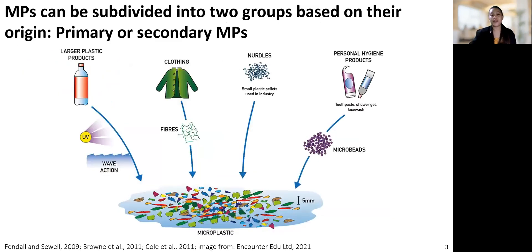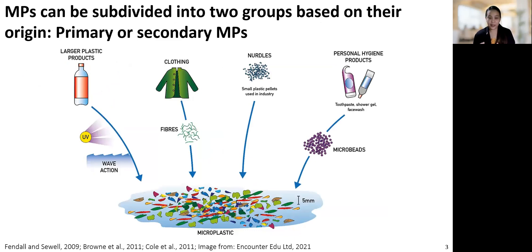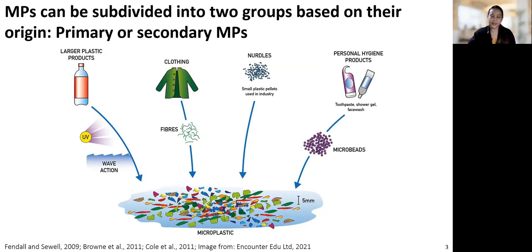Microplastics can either be primary or secondary. Primary MPs consist of manufactured plastics that are microscopic or small-sized, such as microbeads in cosmetic products or industrial pellets, whereas secondary MPs are fibers and fragments of plastics derived from the breakdown of larger plastic items.